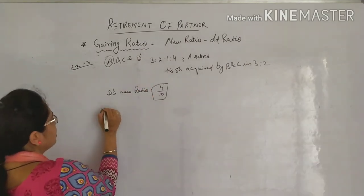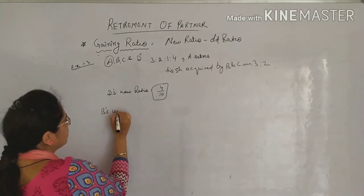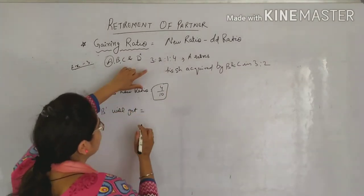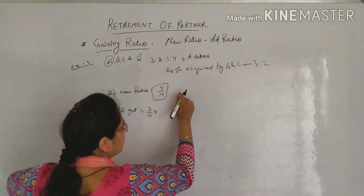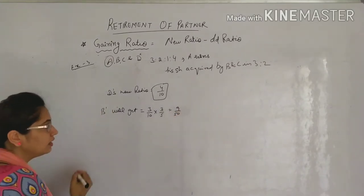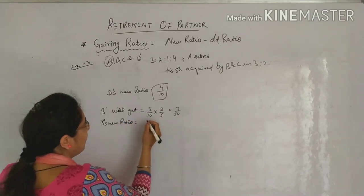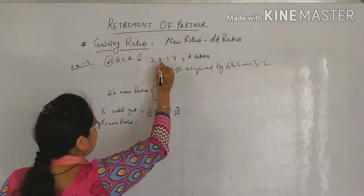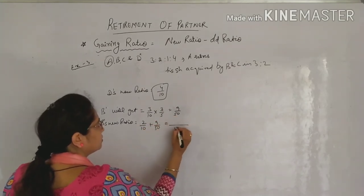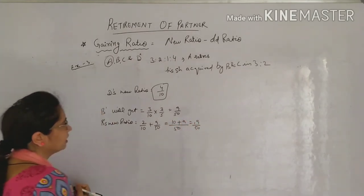Next we'll see what difference came in B's share. B will get: how much is B getting? B will get A's portion, that is 3 by 10, in this ratio. So B's new ratio will be: in the previous share, meaning B's first share, now add what they're getting. 10, 5, 2, 10, and 9: 19 by 50.